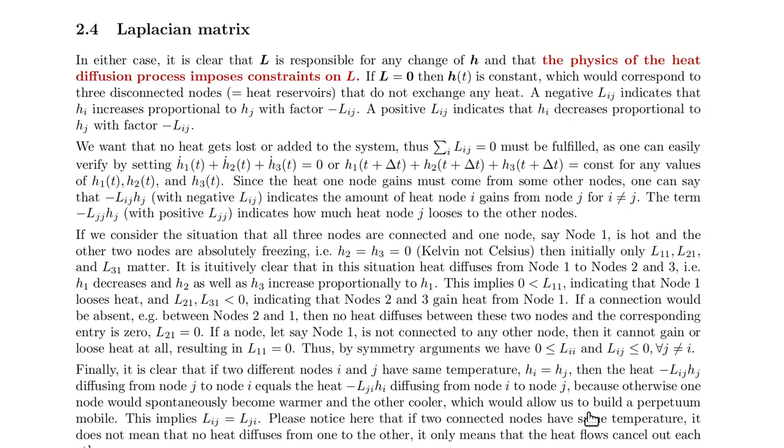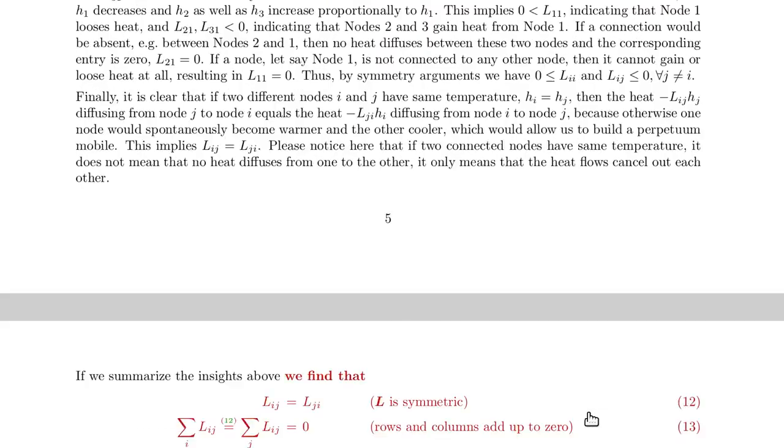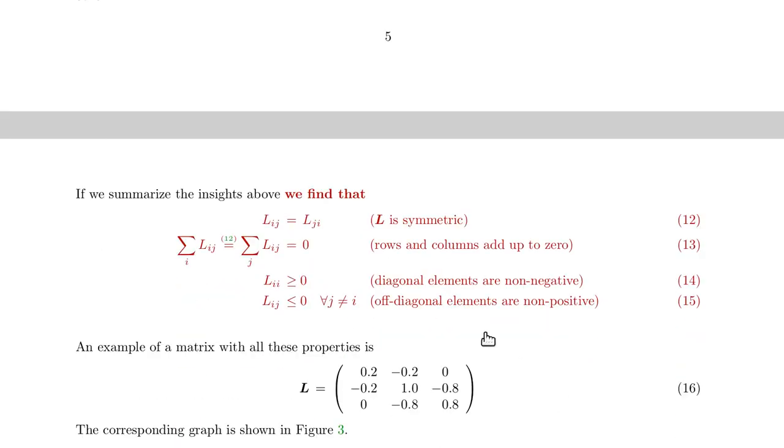And this physics that I've just discussed imposes constraints on the Laplacian matrix. So here you see this summarized. So the heat diffusion is supposed to be symmetric, so it goes in one direction as in the other direction. And if it weren't like that, then you could build a perpetuum mobile.